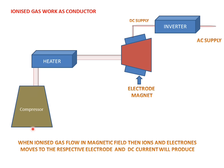Firstly, we will compress the air and increase the temperature of the gas. Then it will go into the heater. The heater will heat the gas to the ionization temperature and the gas will be distributed into ions. These ions will go through the MHD system, and the ions and electrons will move toward their respective electrodes. Electricity will be generated and converted to AC power supply with the help of an inverter, which we will use for further purposes.